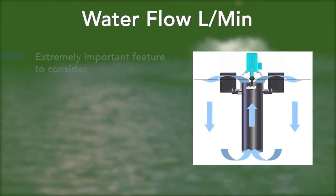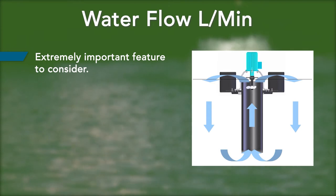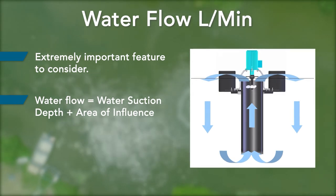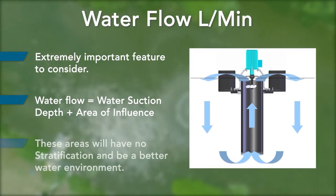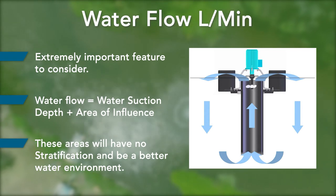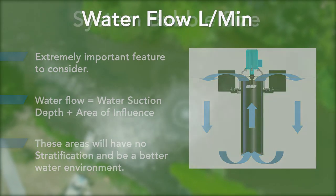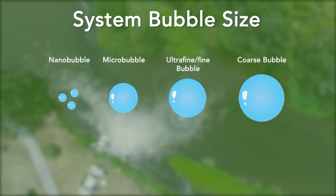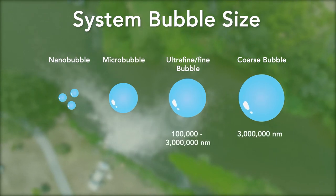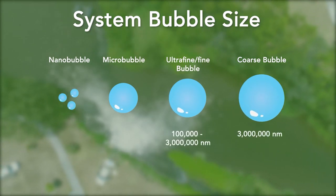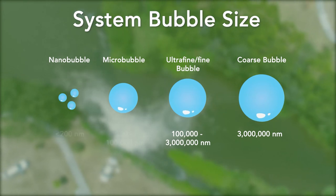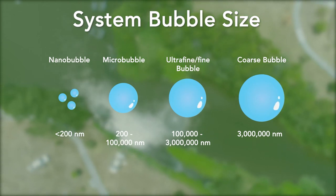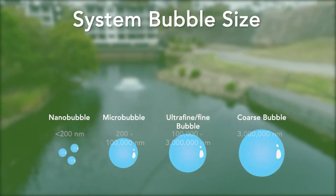Secondly, an important feature to consider is water flow. This must be considered when choosing an aerator. The water flow refers to the water suction depth and the area of influence of a surface aerator. In these areas the water will be oxygenated and mixed with no stratification and generally a better water environment. Thirdly, one of the most important factors when looking at an aeration system is bubble size. A large bubble will rise to the surface quickly and explode, releasing small amounts of oxygen to the water and gassing the majority back into the atmosphere. The smaller the bubble, the longer it is in contact with the water, therefore more oxygen is transferred as it takes longer to reach the surface.